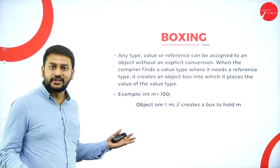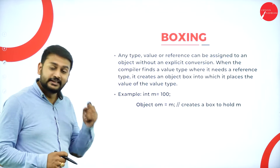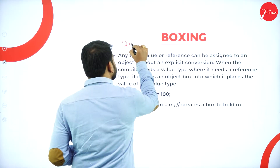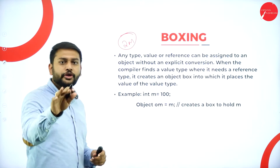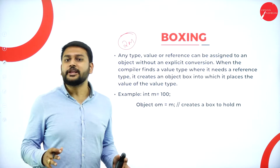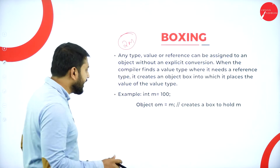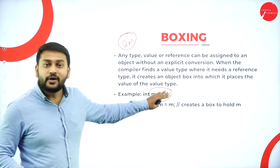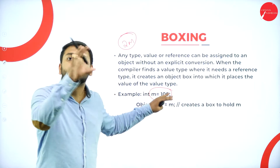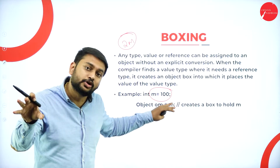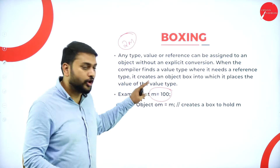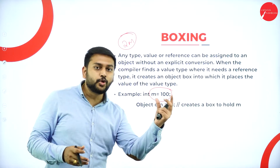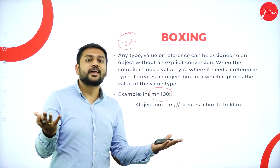Listen to me carefully — this is going to be very important for a two-marks question; you can expect this in your paper. What is the meaning of boxing? Imagine I have a value type. Whenever I have a value, how do I convert that into an object? Yes, you can convert that into an object. That process is what I call boxing — converting a value type into an object type.